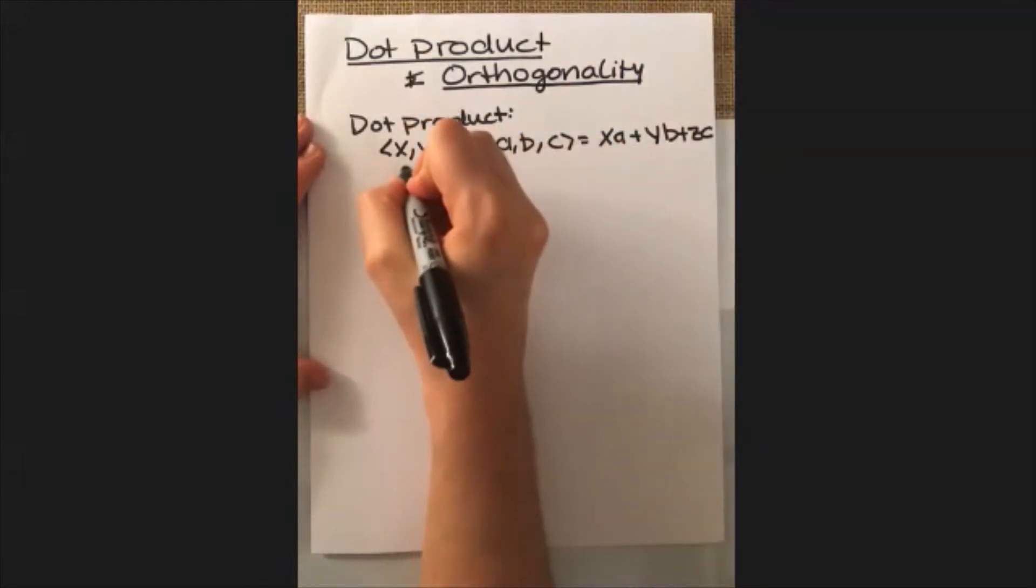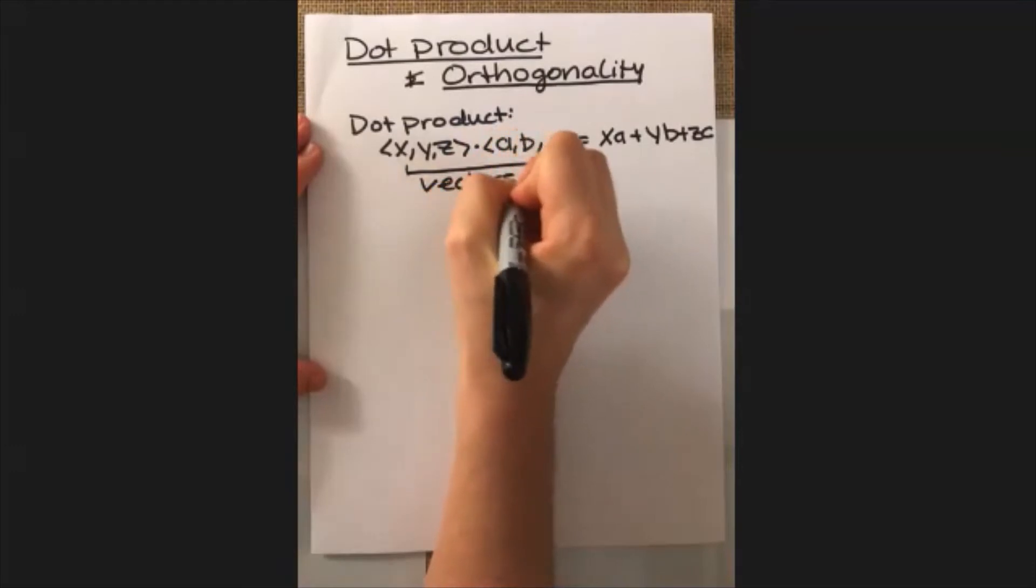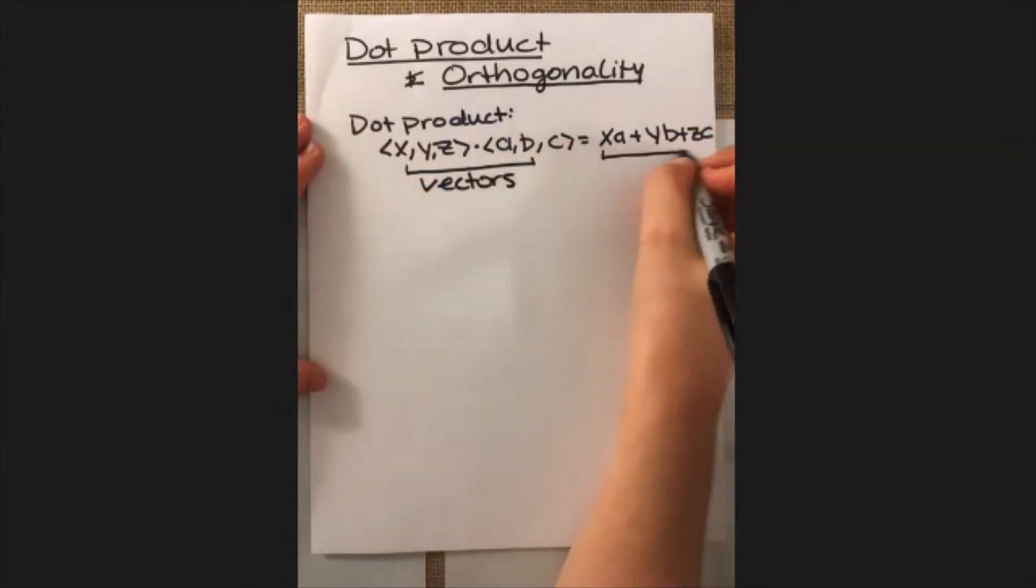Now one thing that I do want to point out is that the dot product starts with vectors, but what you get at the end is actually just a number.